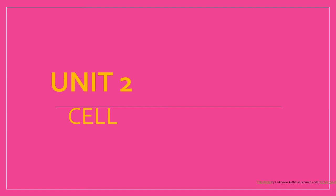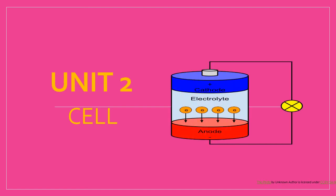We will cover terminal potential difference. All these things you need to know: the units and the differences. You need to picture what a cell looks like in your mind — there is an electrolyte, and there are two terminals. The positive terminal is called the cathode and the negative terminal is called the anode.